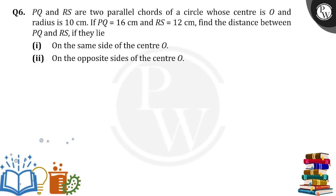PQ and RS are two parallel chords of a circle whose center is O and radius is 10 centimeters. If PQ is equal to 16 centimeters and RS is equal to 12 centimeters, find the distance between PQ and RS if they lie on the same side of the center O, and on the opposite sides of the center O.